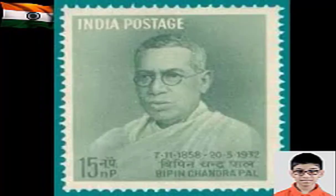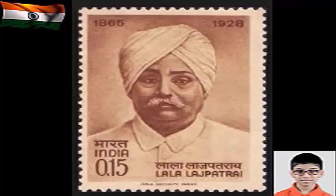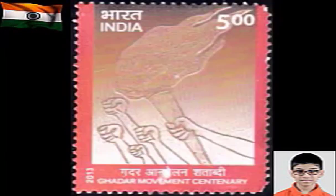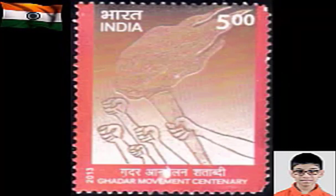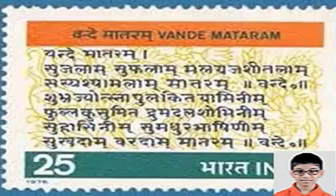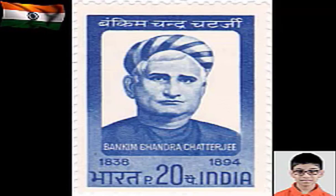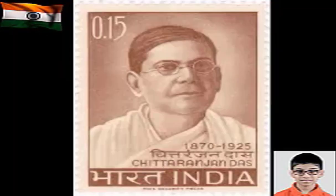Tilak was backed by rising public leaders like Bipin Chandra Pal and Lala Lajpat Rai. The Ghadar Party was formed overseas in 1913 to fight for the independence of India, with members coming from the United States, Canada, Shanghai, Hong Kong and Singapore. In July 1905, Lord Curzon, the Viceroy and Governor General of India, ordered the partition of the province of Bengal, supposedly for improvement in administrative efficiency. However, Indian leaders and the people of India felt it was an attempt to weaken nationalism and break the unity between Hindus and Muslims.